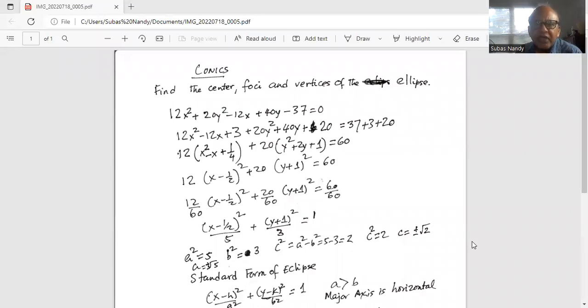Find the center foci and vertices of the ellipse. 12x square plus 20y square minus 12x plus 40y minus 37 equal to zero.